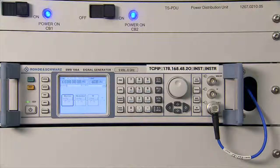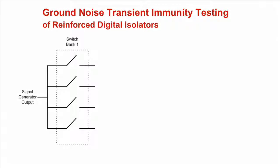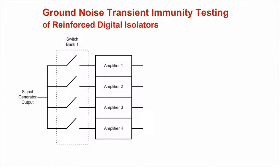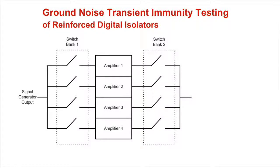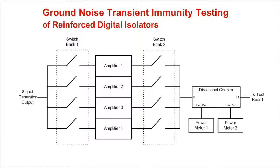Now let's look at how the GNTI signal is produced by looking at some test equipment. The first piece of equipment needed is a signal generator responsible for generating the noise source across all frequencies that you intend to test. Since this signal generator is not capable of driving the needed power levels, we have a switch bank that is used to route the noise source to a series of amplifiers that are each only capable of properly amplifying the noise signal for a subset of the full frequency range. At the output of the amplifier is another switch bank that routes the output signal to the coupling network. This coupling network has a pass-through port routed to the test board and two additional ports used for power meters to measure the forward power and reflected power in the test setup real-time. This closes the control loop and allows you to monitor and ensure that the desired power is always being applied at each amplitude step.